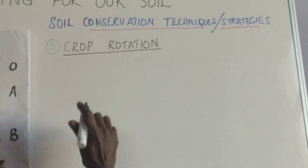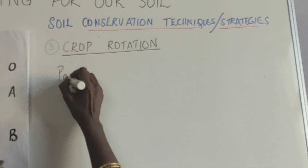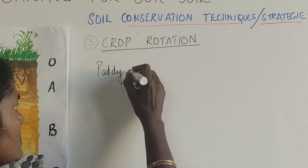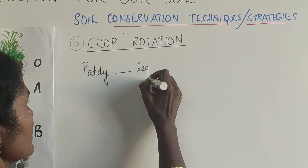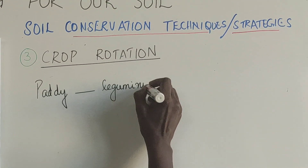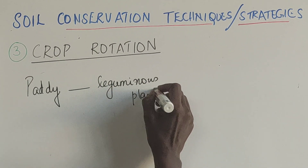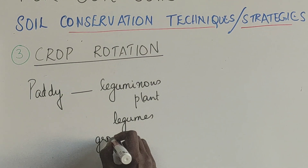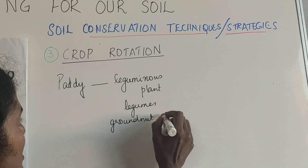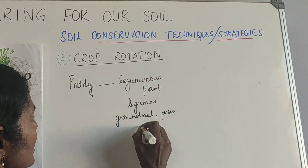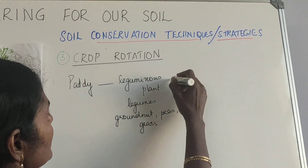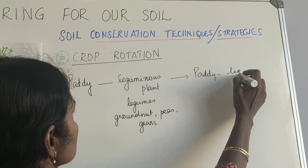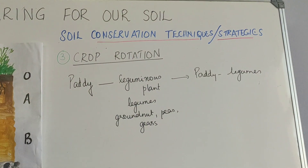The next method is crop rotation. Suppose we cultivate paddy and the nitrogen in the soil becomes less — it is then followed by some leguminous plants, called legumes, for example groundnuts, pulses, peas, and grass. Then paddy is grown again, followed by legumes. This cycle is called crop rotation.